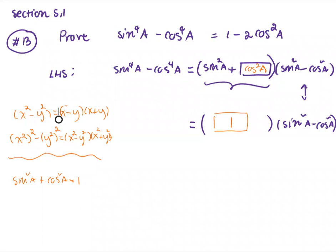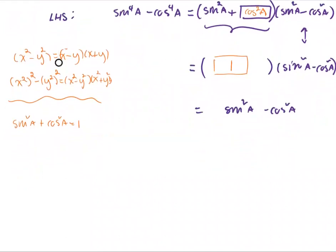Since 1 multiplied by anything equals itself, the next step is simply sin²A minus cos²A. Then the last part of the problem asks you to fill in the blank: 1 minus something, then subtract cos²A. The cos²A carries to the next step.